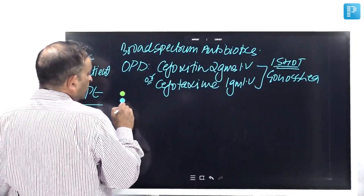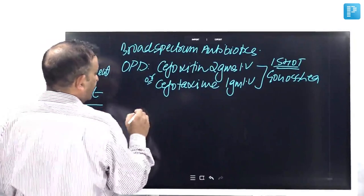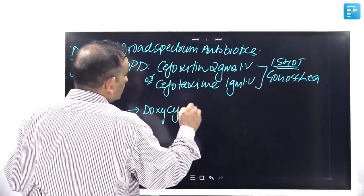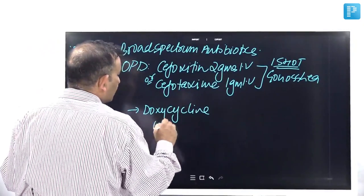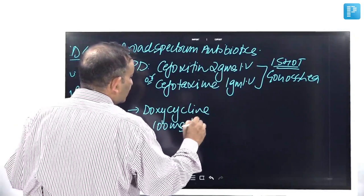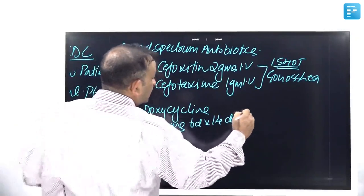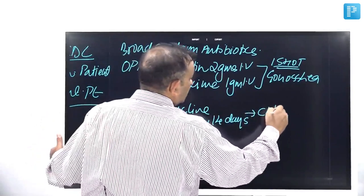Then you can give the next, you can give Doxycycline. You can give around 100 milligrams twice a day into 14 days. That takes care of the chlamydia.